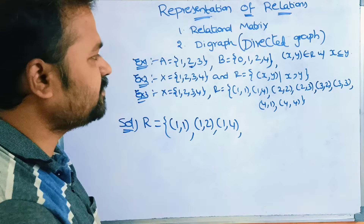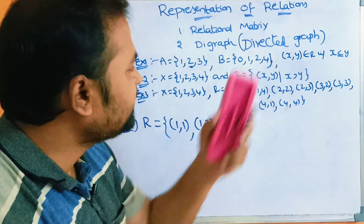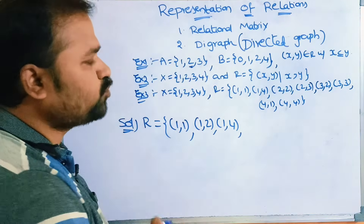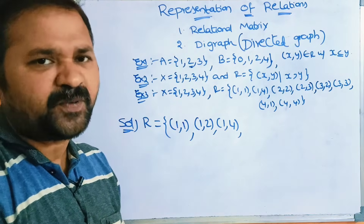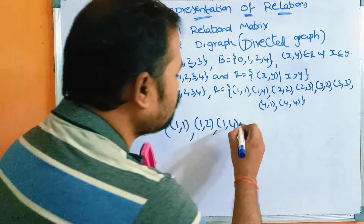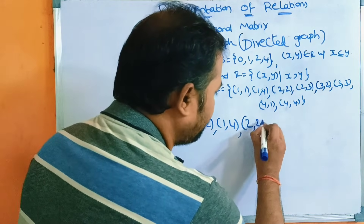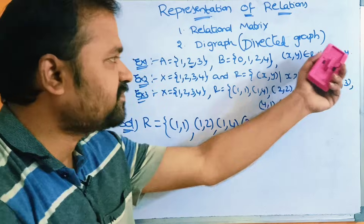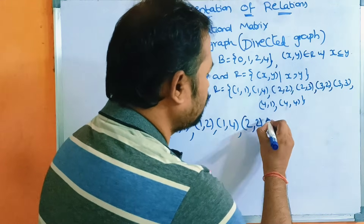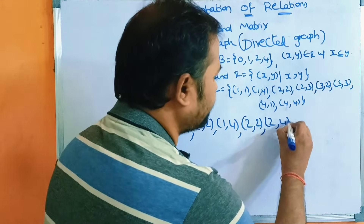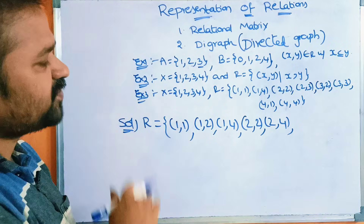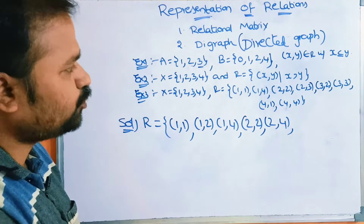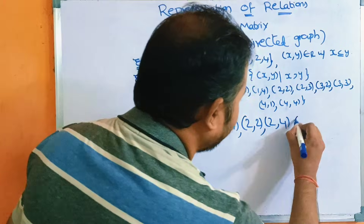Now consider the second element and form ordered pairs with the second set. (2,0) is not possible since 2 > 0. (2,1) is not possible since 2 > 1. (2,2) is possible because 2 = 2 and the condition is less than or equal to. (2,4) is also valid. For element 3: (3,0), (3,1), (3,2) are not possible, but (3,4) is valid since 3 < 4. So the relation R is established.